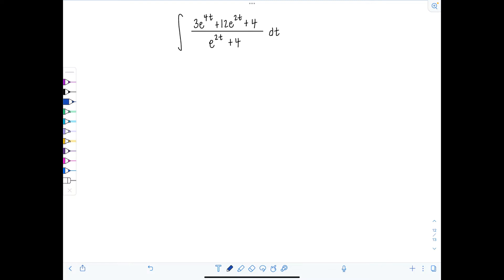So the key is to split this up into two integrals, actually. So first integral, I'm going to just group the first two terms in the numerator, 3e to the 4t plus 12e to the 2t over e to the 2t plus 4 dt, plus, and then we'll just have 4 over e to the 2t plus 4 dt as a second separate integral. So we've basically got two integrals to evaluate now.